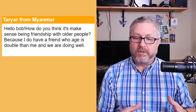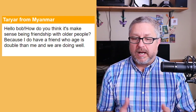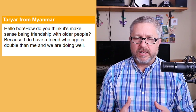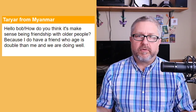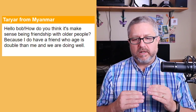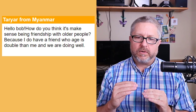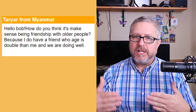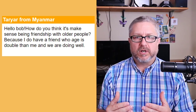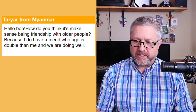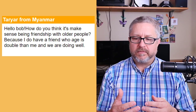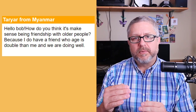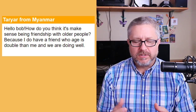Taryar asks if it makes sense to have friendships with older people — he has a friend who is double his age and they are doing well. I think it's great. I have friends of all ages — I have a friend who is many years older than me and we go out for a beer every once in a while. One of the problems in North America is that people tend to be friends mostly with people of the same age, so older people don't connect as well with younger people. Holland actually does a really good job of creating ways for older and younger people to interact.